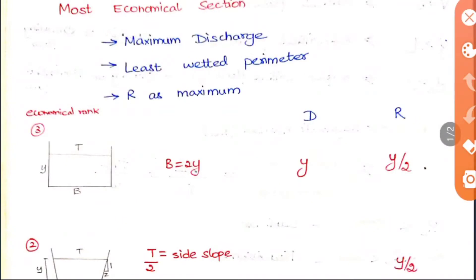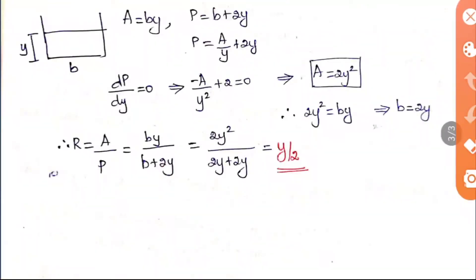We will study the values for different cases, similar to how we studied hydraulic depth and radius earlier. For the rectangular section alone, I have given the derivation to find the r value. For a rectangular channel, area equals b times y, and perimeter equals b plus 2y.